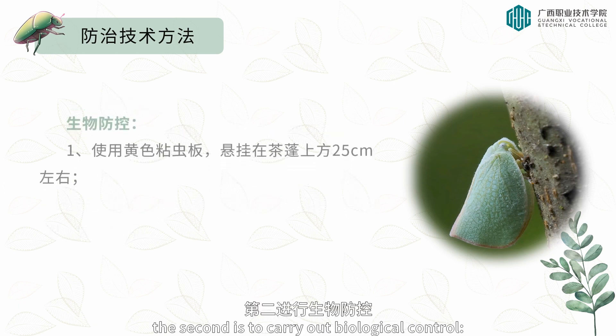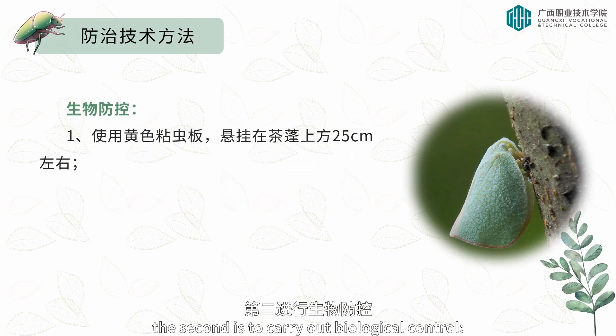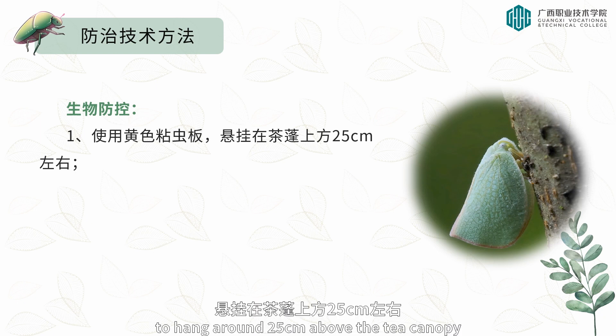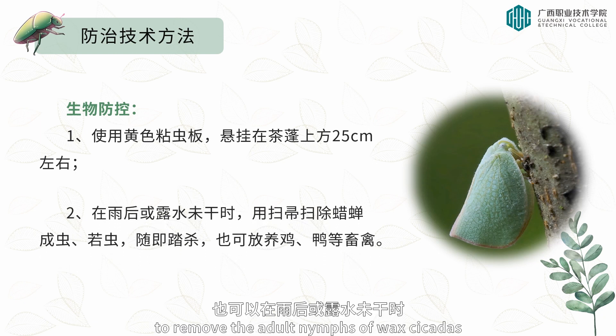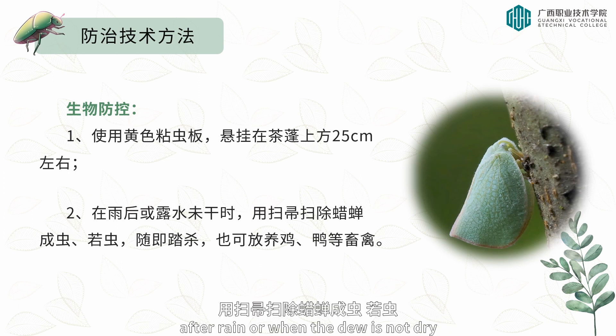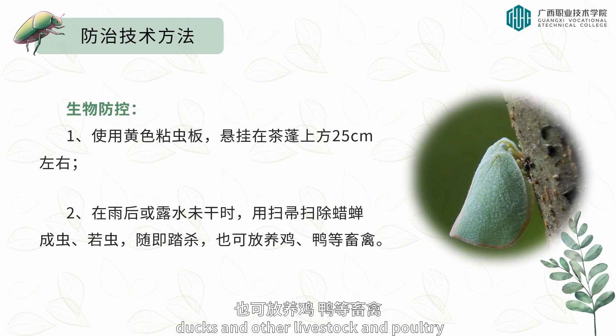The second is to carry out biological control. Using a yellow sticky board hung around 25 centimeters above the tea canopy, we can also use a broom to remove the adult nymphs of waxicadas after rain or when the dew is not dry, and step and kill them. We can also release chickens, ducks, and other livestock and poultry.